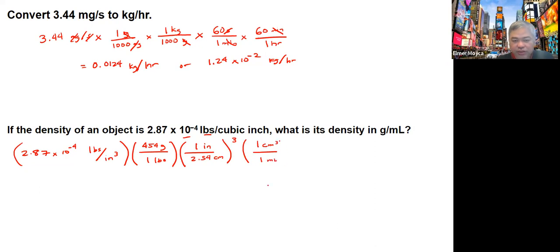We know one cubic centimeter equals one mL. If we look at the units, pounds cancel, cubic inches cancel, leaving you with grams per mL. When you do the calculation, you'll get around 7.95 times 10 to the negative 3 grams per mL. Please calculate your answer to verify this is correct.